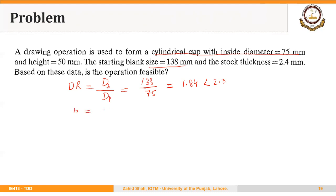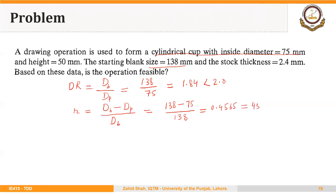Similarly, the reduction equals the difference of blank diameter and punch diameter — noting that the punch diameter is the inside diameter of the cup — divided by the blank diameter. So that is (138 minus 75) divided by 138, which turns out to be 0.4565. Expressed as a percentage, that is 45.65%, which is of course less than 50%.